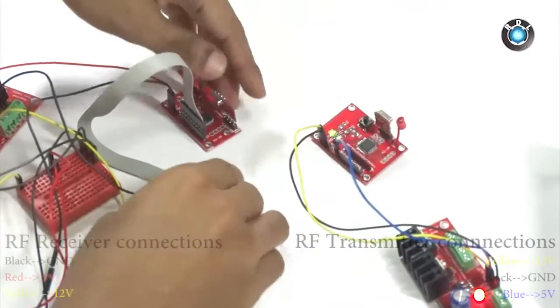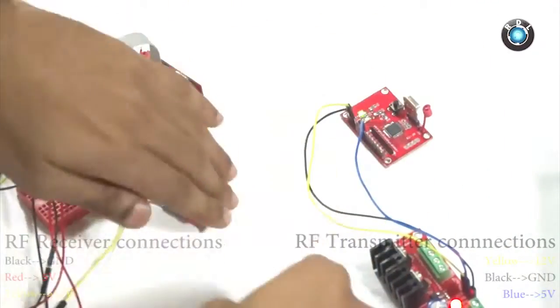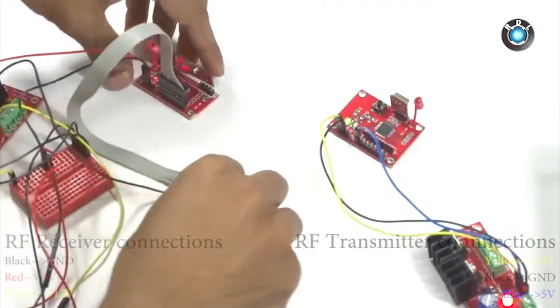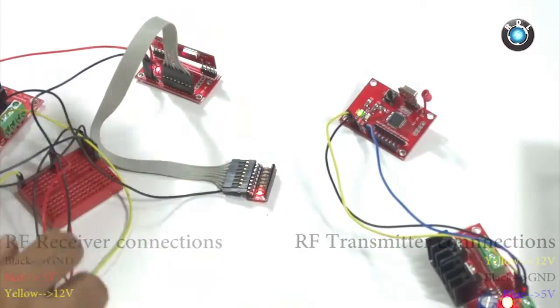If you could notice, there is no wired connection between the receiver and the transmitter module. Basically, this data transmission takes place in radio frequency at 434 MHz.